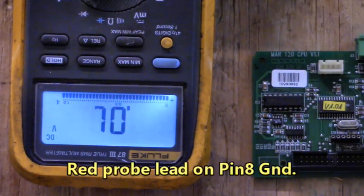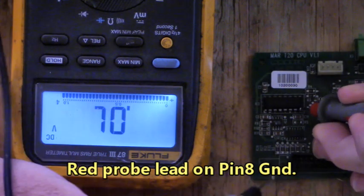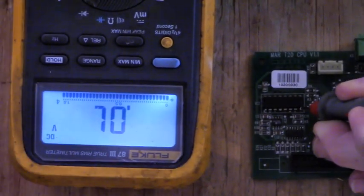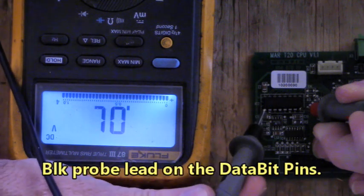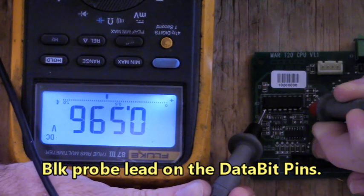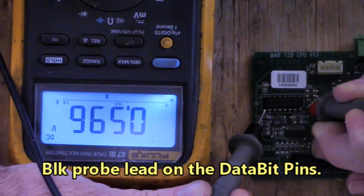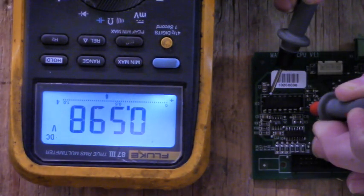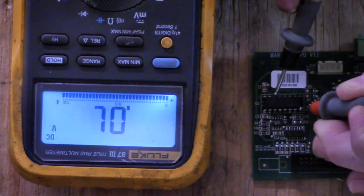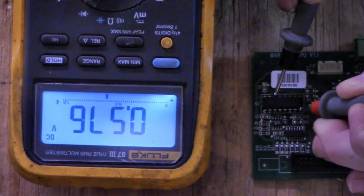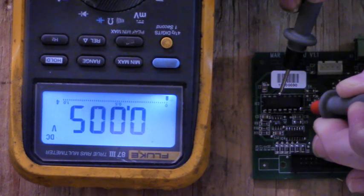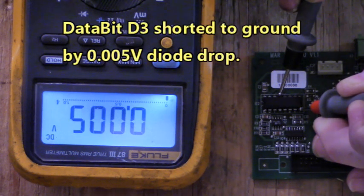I'm going to put my red lead on ground which is pin eight. I'm going to put my black lead on data bit zero. We got a diode drop of 0.596. Let's come along to the other side. Pin 15 is data bit one. Here's a diode voltage drop of 0.598. Here's data bit two on pin 14, 0.576. Here's data bit three. That's a short circuit right there on data bit three, 0.0005.